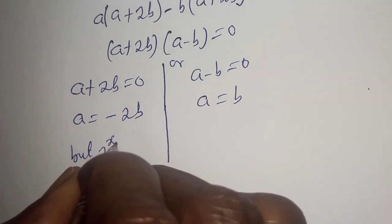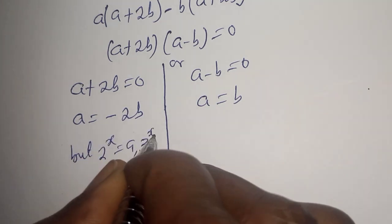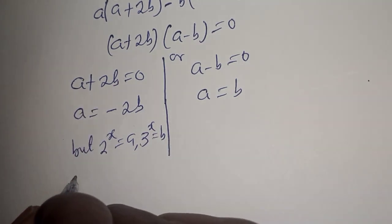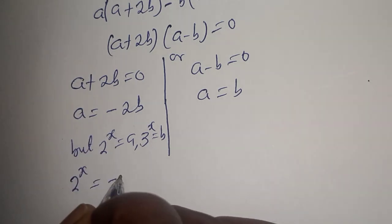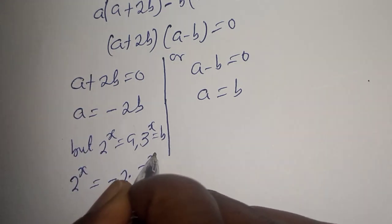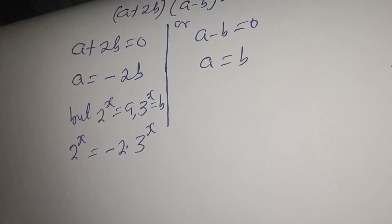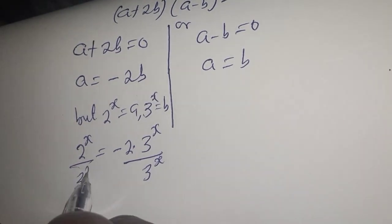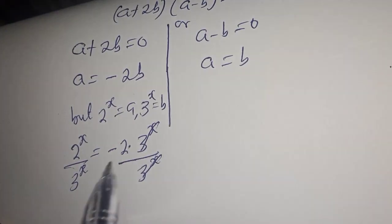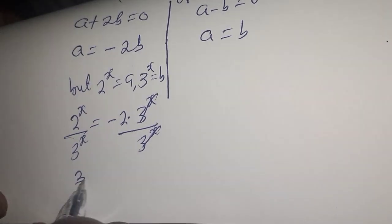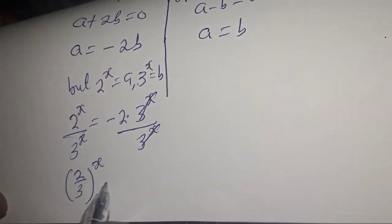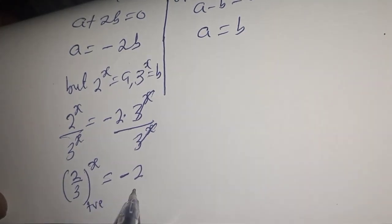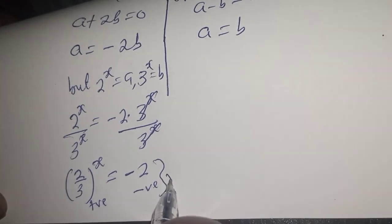From the first case, a plus 2b equals 0, and since 2 raised to power s equals a and 3 raised to power s equals b, this gives 2 raised to power s equals minus 2 multiplied by 3 raised to power s. Dividing both sides by 3 raised to power s gives 2 over 3 to the power s equals minus 2. But we know the left side is positive and the right side is negative, so this case is rejected.